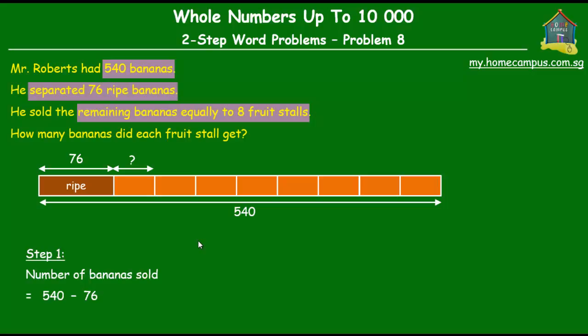Okay, so that's 540, the total number of bananas, minus the 76 ripe bananas. So let's do the working over here and find out that number. So 540 minus 76. We won't get into the details of each step because we have covered that in other tutorials. So 540 minus 76 is equal to 464.